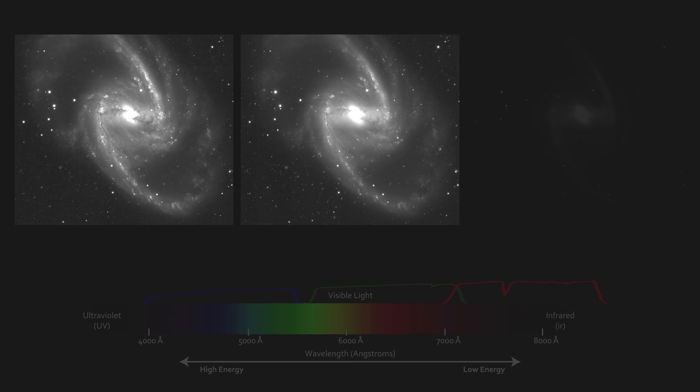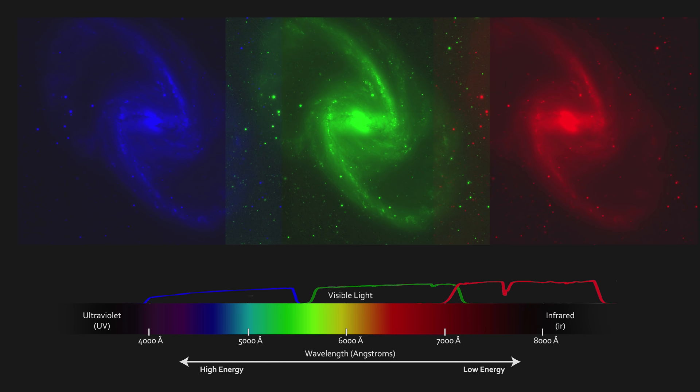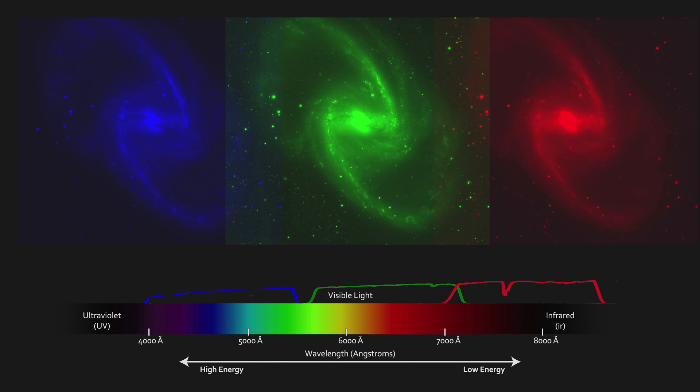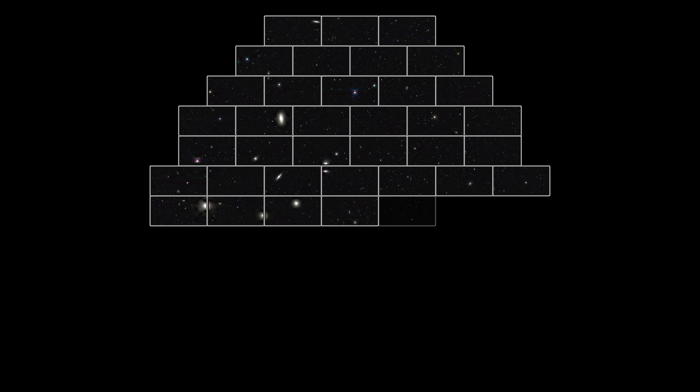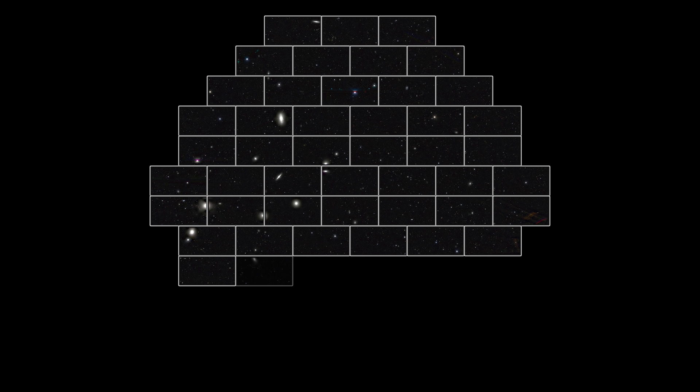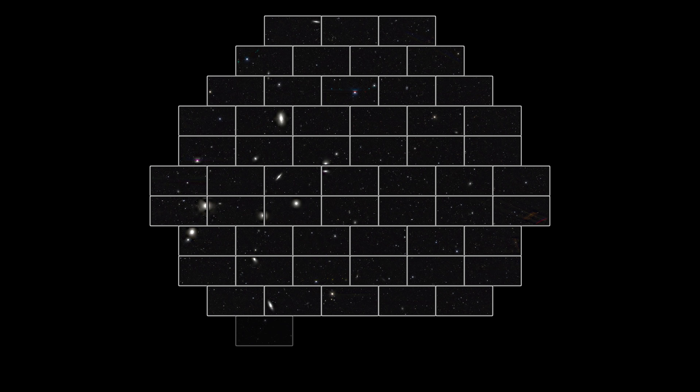The telescope captures the light of stars and galaxies across the electromagnetic spectrum, from high-energy ultraviolet to low-energy infrared. These colors reveal important galaxy characteristics, such as the rate of star birth, the amount of dust or gas within them, their distance from Earth.